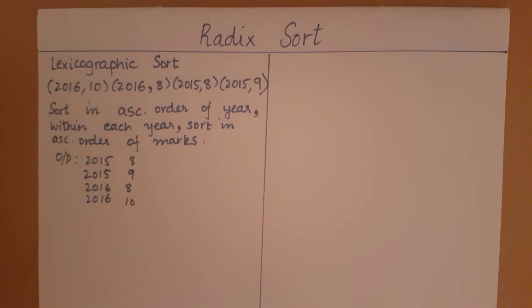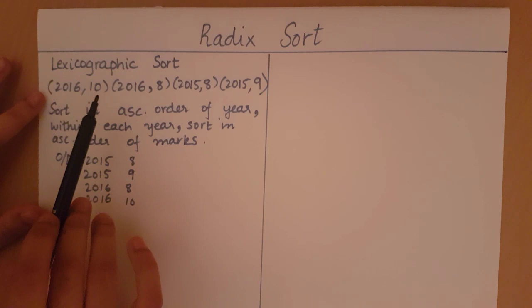Now when we are sorting tuples with respect to the first dimension and then the second dimension and so on, we call such a sort a lexicographic sort.